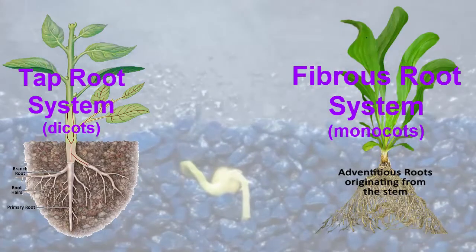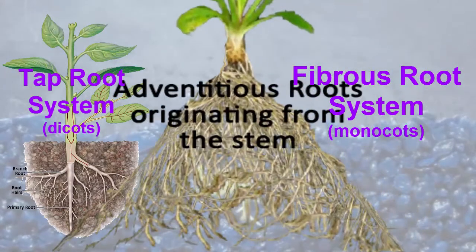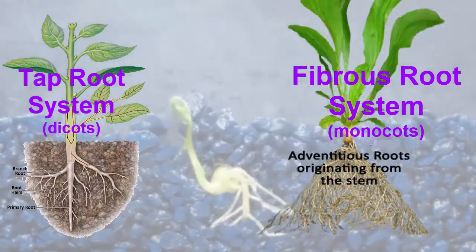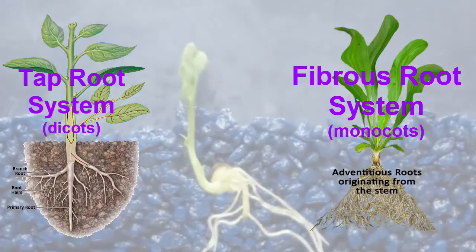In monocots, the primary roots die off and is replaced by the formation of adventitious roots originating from the stem. This led to the formation of a fibrous root system.